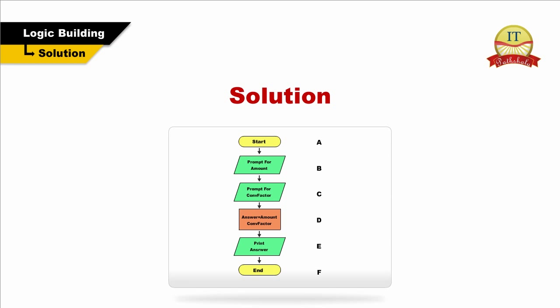In this sample flow chart, symbol A represents the terminator symbol, which is used to indicate the start of the logic model. Symbol B represents a parallelogram, which is used for input or output operations — in this case, to capture information about the amount of the item from the keyboard.